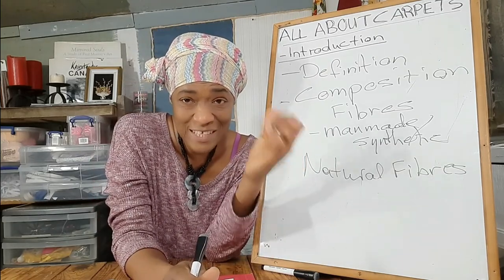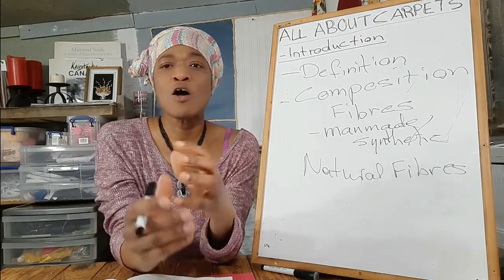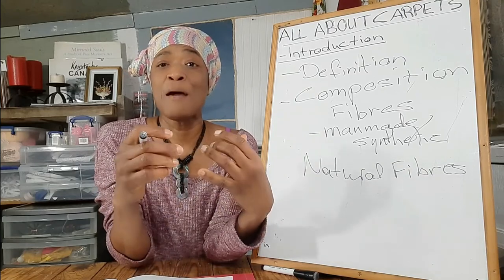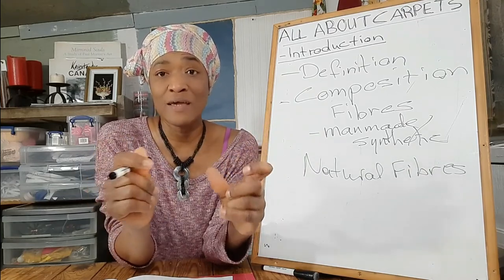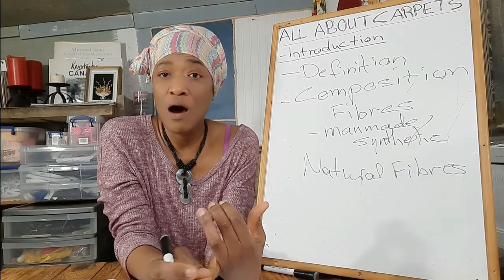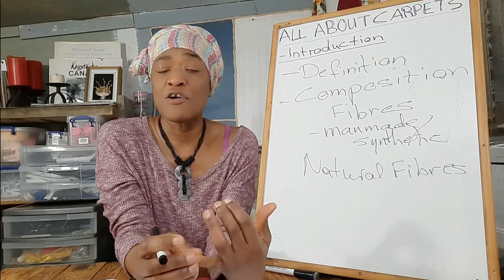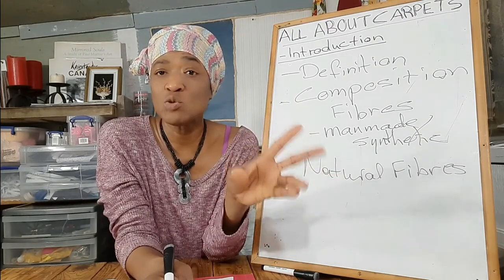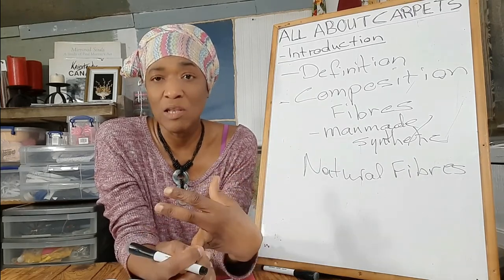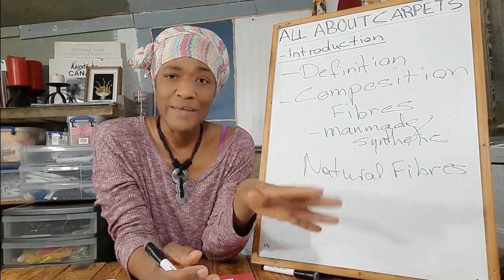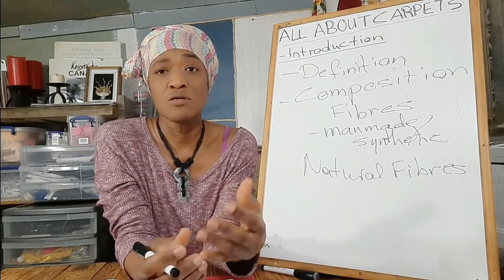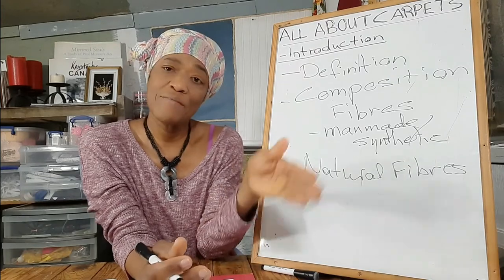Talking about composition — that is a great segue to our next subheading: composition. Carpets are composed of fibers, and those fibers can either be man-made, which are the synthetic fibers, or they can be natural fibers. There are lots of man-made fibers used to make carpets, but the two most common ones are polyester and nylon, which we will look at later in the series. Some examples of natural fibers are sisal, wool, and jute — and there are lots more, which we'll look at throughout the series.